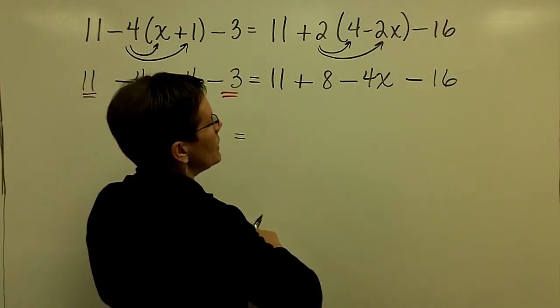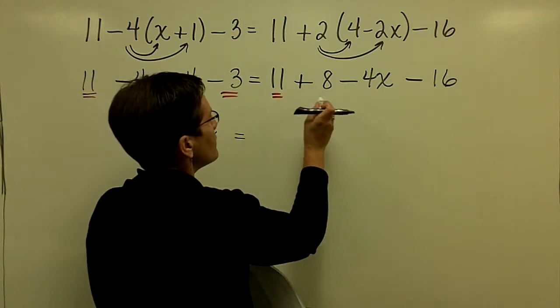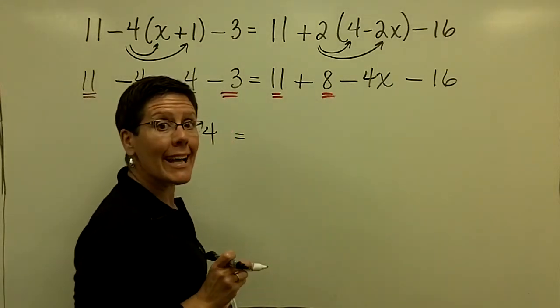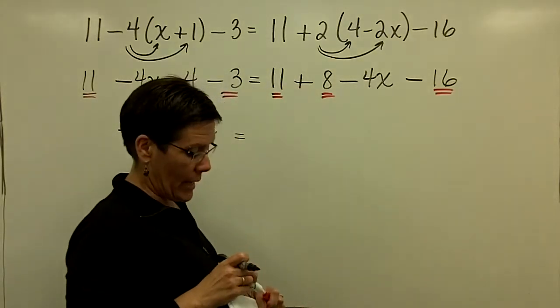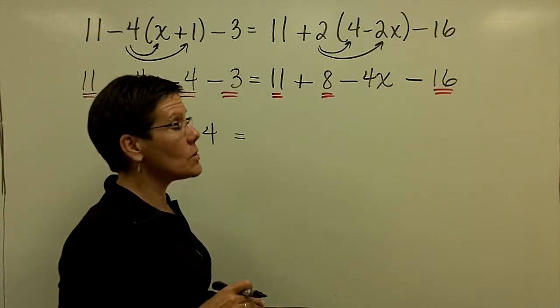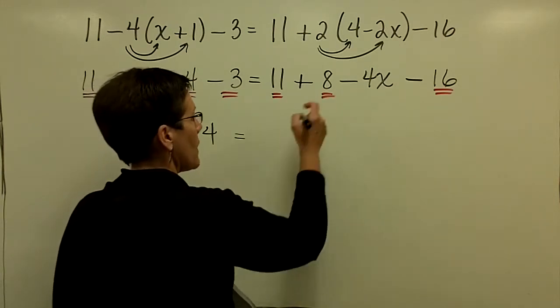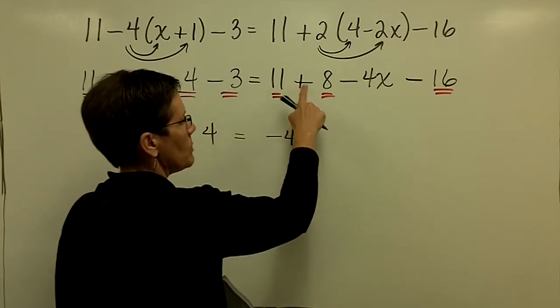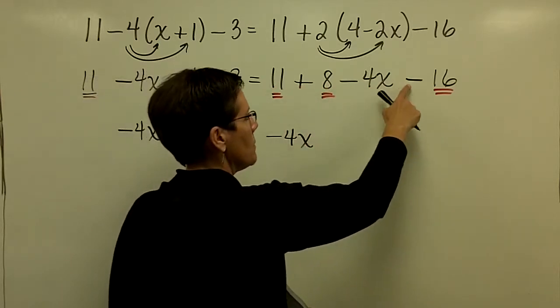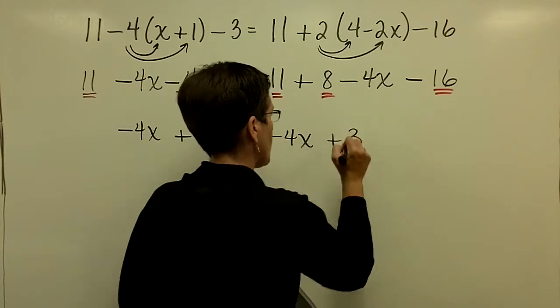Over here, we've got our like terms. We've got an 11 and an 8. They'll add to be 19. And then when we subtract 16, we'll get 3. So you can work left to right and get those values in your head. So I have that negative 4x. I want to check this one more time. 11 plus 8 is 19, minus 16 is 3.